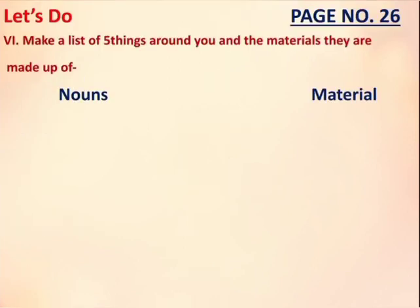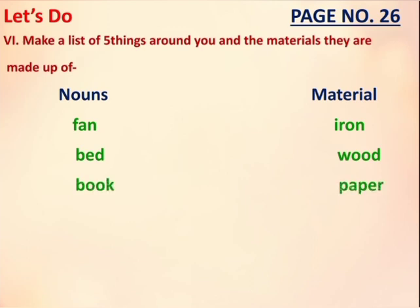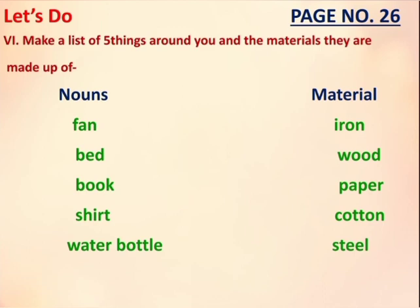Question number 6 on page number 26 says: Make a list of 5 things around you and the materials they are made up of. So everyone just look around. We have a fan, which is made up of iron. We have a bed, which is made up of wood. We have a book, which is made up of paper. We have a shirt, which is made up of cotton. We also have a water bottle, which is made up of either plastic or steel.